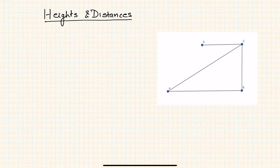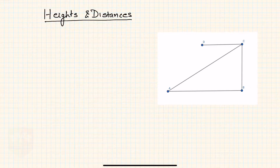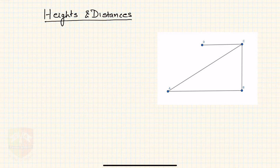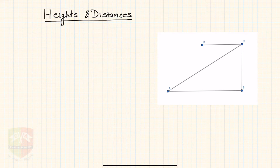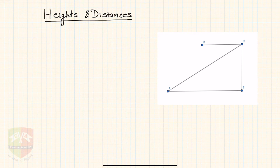Welcome to this session on trigonometry. Today we are going to take up heights and distances. Heights and distances is an area of application of trigonometry — for example, you can measure the height of a building, a tower, or a tree, or measure the distance between two banks of a river using the principles of trigonometry.